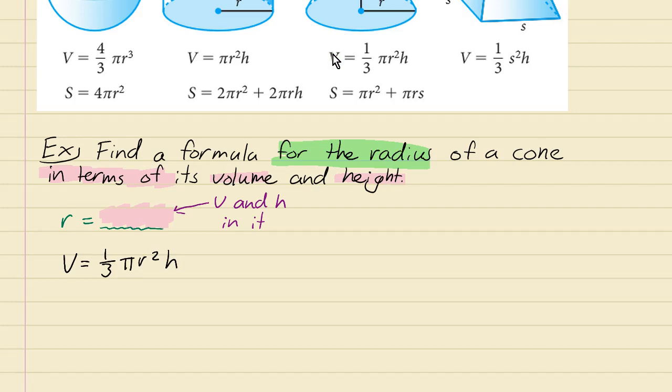But first we have to get r squared by itself. We're gonna do extraction of roots. The first thing I'm gonna do is multiply both sides by three. On the right side, one third times three is one, so that cancels out. So now let's get the pi and h on the other side by dividing by pi times h. That will cancel out the pi and the h.